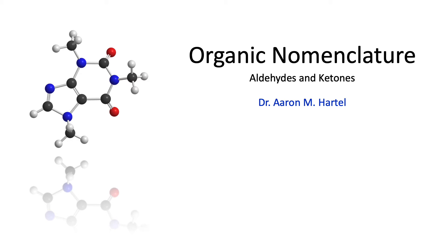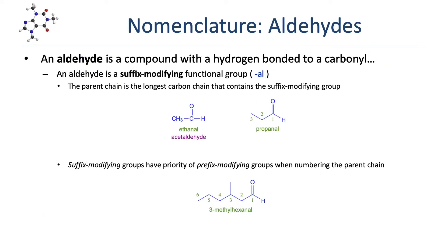In this lesson, we're going to take a look at the systematic nomenclature for aldehydes and ketones. An aldehyde is a carbonyl compound with a hydrogen bonded directly to the carbonyl carbon. An aldehyde is a suffix-modifying functional group, replacing the -e ending of the parent alkane with -al.